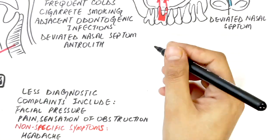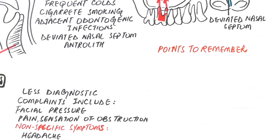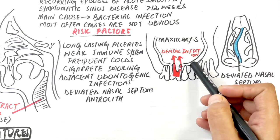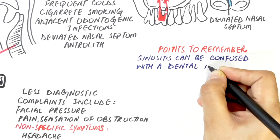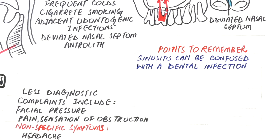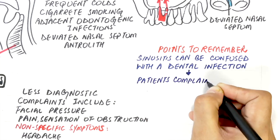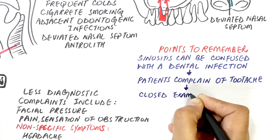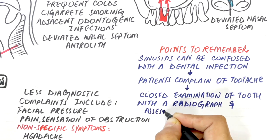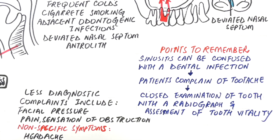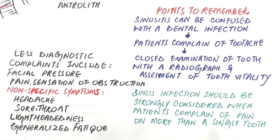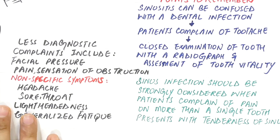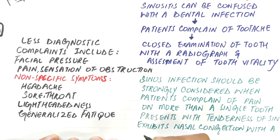Since the roots of maxillary molars have a close connection with the maxillary sinus, maxillary sinusitis can often be confused with a dental infection. Most patients presenting with maxillary sinusitis may complain of toothache. In such cases, examination of periapical tissues by radiograph and assessment of tooth vitality through clinical examination becomes integral to ruling out dental disease. A sinus infection should be strongly considered when patients complain of pain from more than a single tooth, tenderness over the maxillary sinuses, nasal discharge with foul odor, fever, or headache.